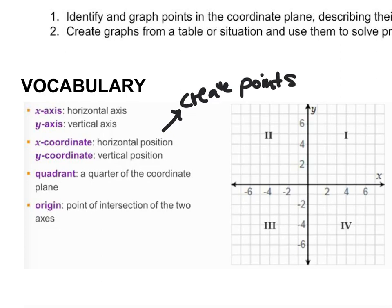Each of those points are going to be in a quadrant. You're either going to have quadrant 1, quadrant 2, quadrant 3, or quadrant 4. The origin is right here at (0, 0).